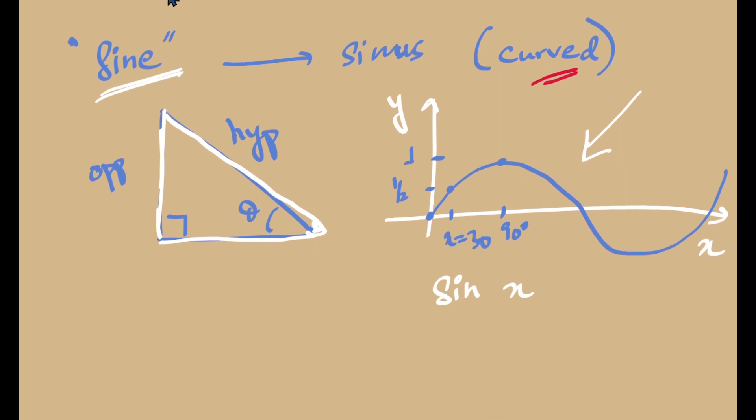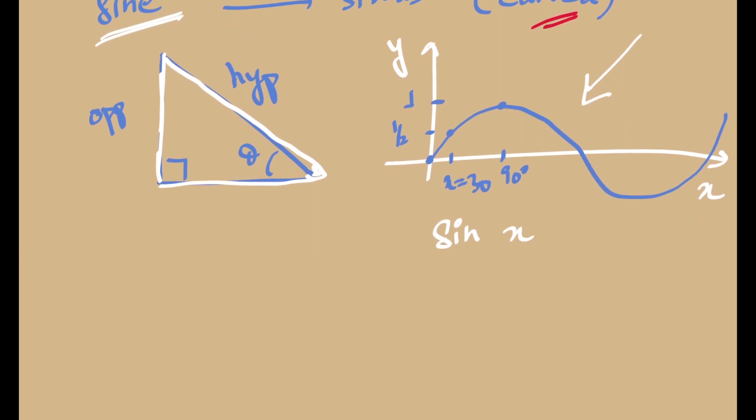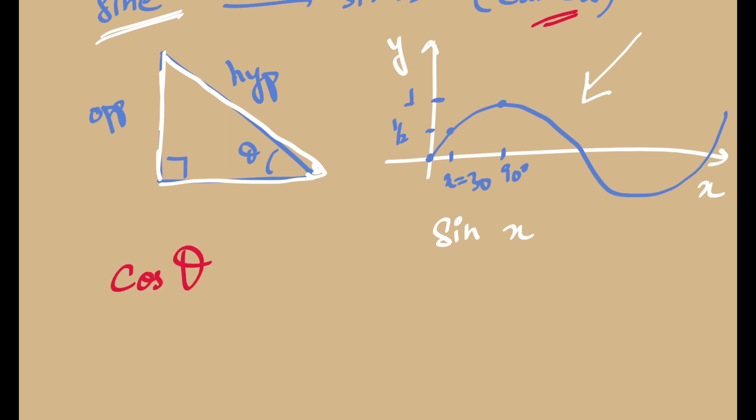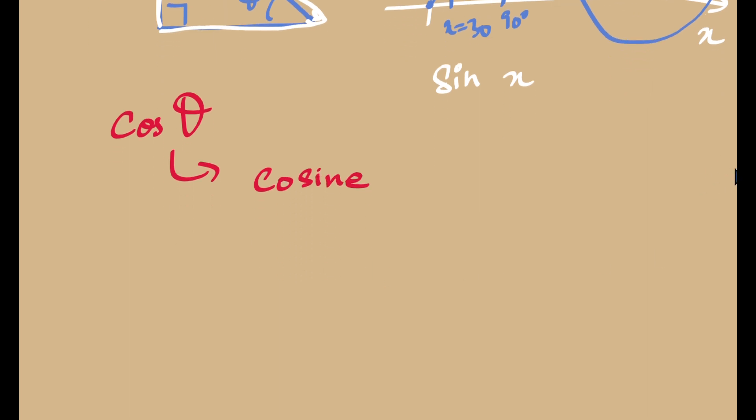And the cosine is very interesting because the cos is the abbreviation we use. And this is the abbreviation for the word cosine. And we have a proper understanding of why is it so. Because it is the complement of sine. And hence we call it cosine. And hence we abbreviate it as cos of theta.